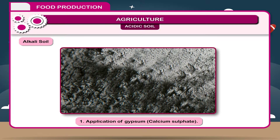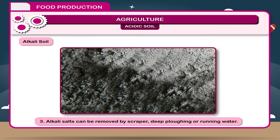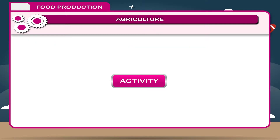1. Application of gypsum — calcium sulfate. 2. Use of acid forming chemicals or sulfur. 3. Alkali salts can be removed by scraper, deep plowing or running water. 4. Application of green manure or by molasses and press mud mixture.